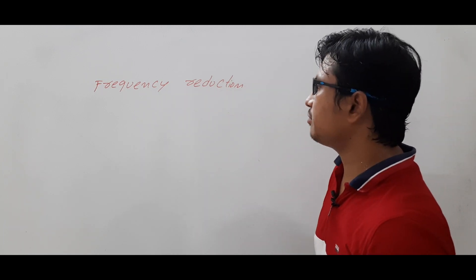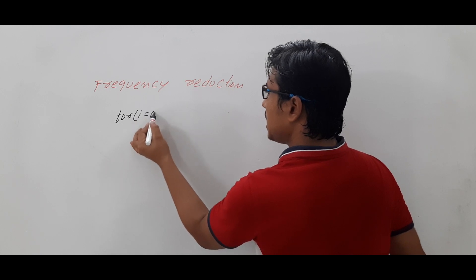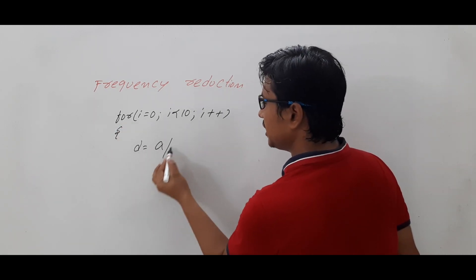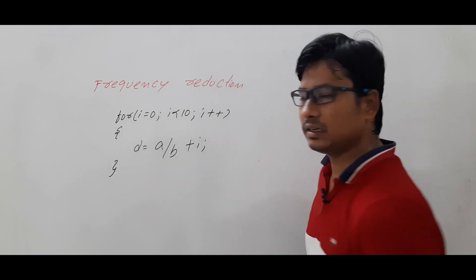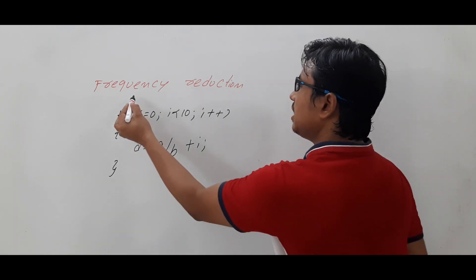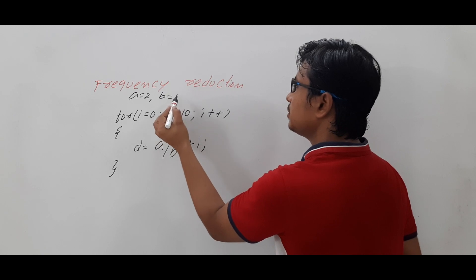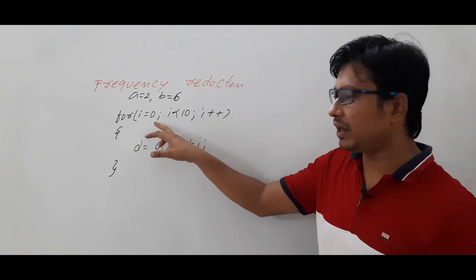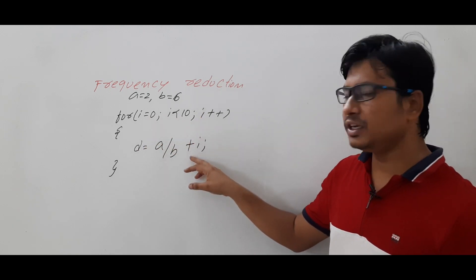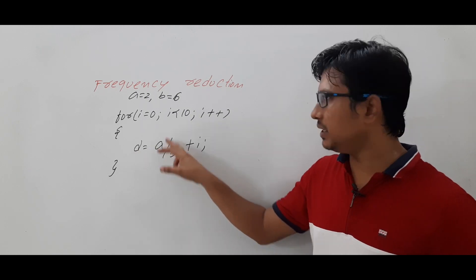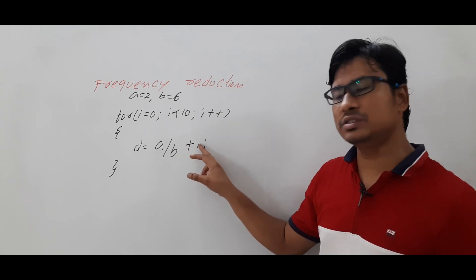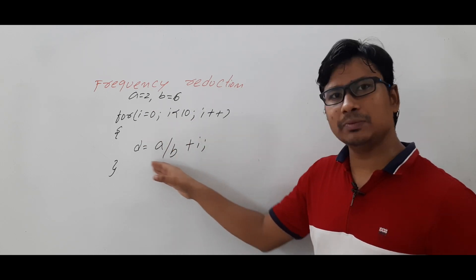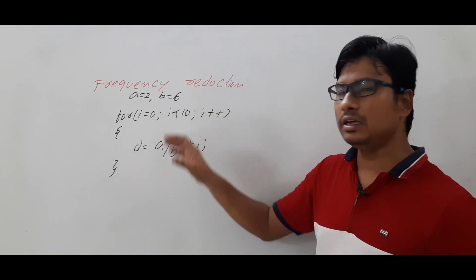Let's take a for loop: for i = 0, i < 10, i++, with an instruction d = a/b + i. If a = 2 and b = 6 (some fixed values), every time the loop runs, you calculate a/b, meaning 2/6, plus the current i value to get d. Then you have a print statement: printf("%d", d).